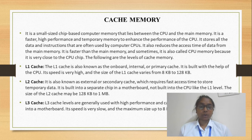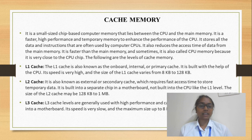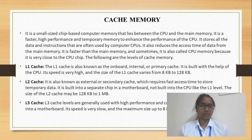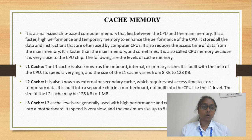Level 1 cache is also called on-board, internal, or primary cache, and has very high speed. Level 2 cache is called external or secondary cache; its speed is less than level 1, it is temporarily stored, and it is not inbuilt in the CPU — it is present on the motherboard, while level 1 is inbuilt in the CPU. Level 3 cache is generally slower in speed compared to both level 1 and level 2.